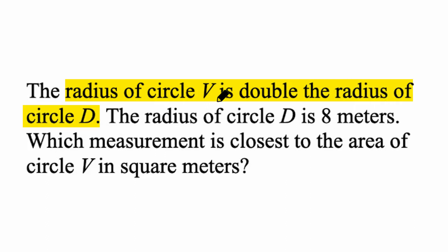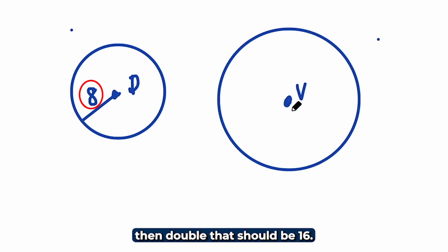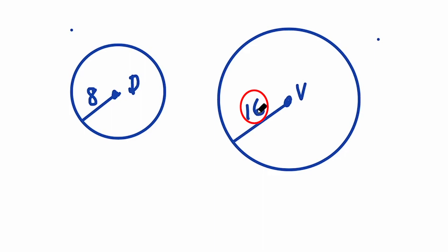Well, if this had a radius of 8, then double that should be 16. So the radius of this circle should be 16.